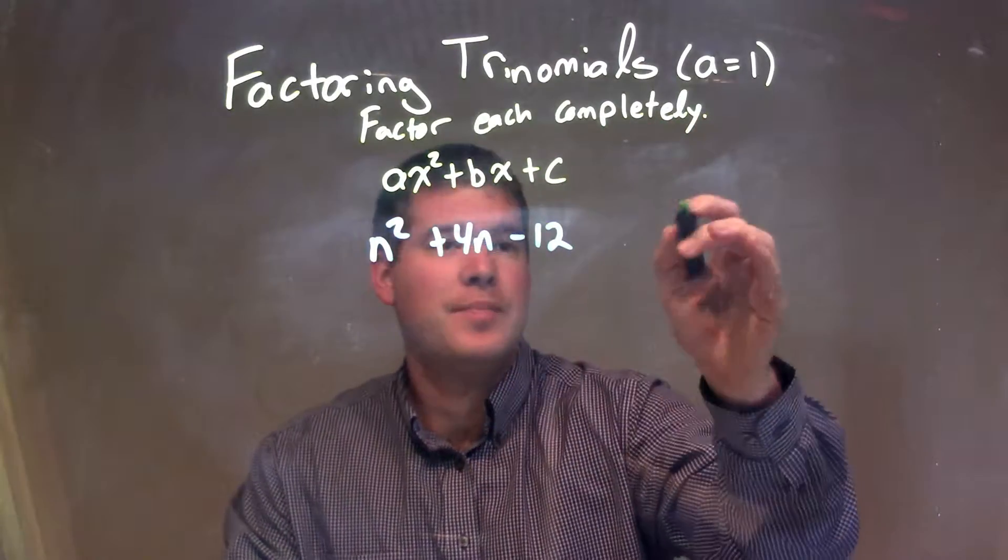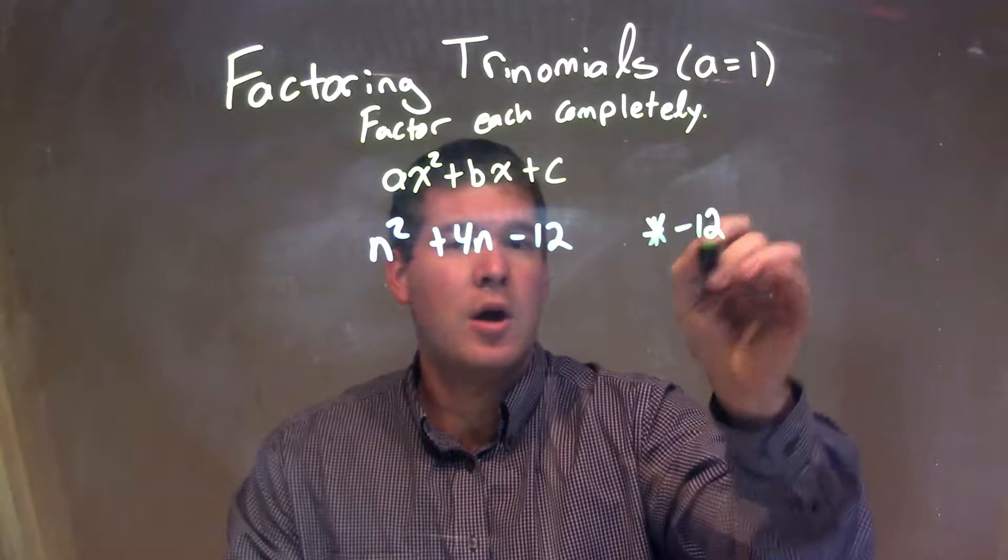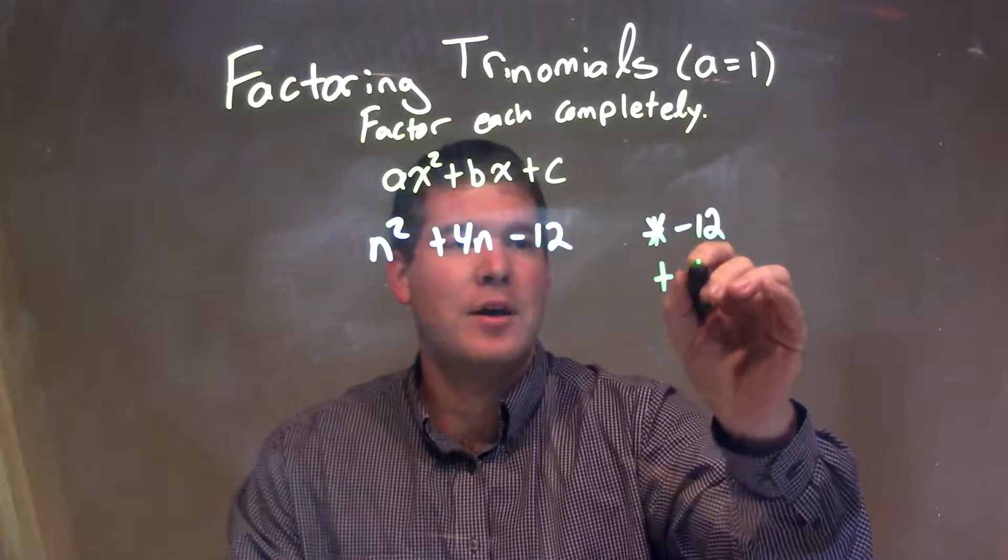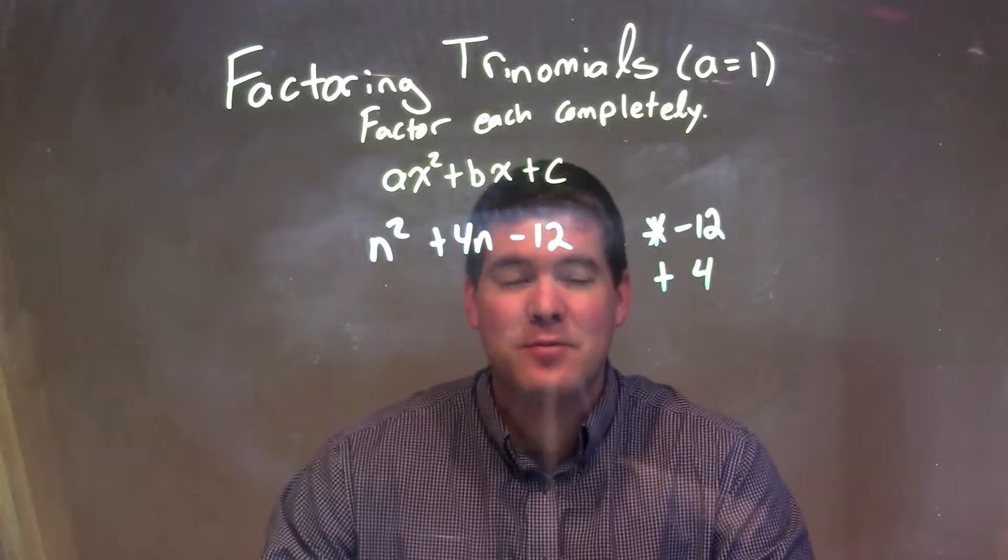Since our a value is equal to 1, I'm going to ask what two numbers multiply to be my c, which is -12, but also add to be my b value, which is 4. So what two numbers multiply to be -12 and add to be 4?